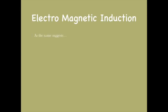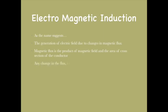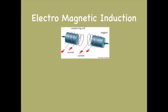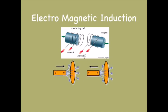Now let me teach you about electromagnetic induction. As the name suggests, this is the generation of the electric field due to a change in the magnetic flux. Magnetic flux is the product of the magnetic field and the area of cross section. Any change in the flux — that is, a change in the magnetic field only, the area of cross section only, or a change in both — will lead to an induced electric field. This is what EMI means. The diagrams given below show examples in which we experience a change of flux which consequently generates an induced electric field.